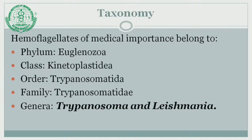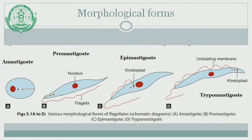Haemoflagellates of medical importance belong to the phylum Euglenozoa. You don't have to remember all these names. The important genera Trypanosoma and Leishmania belong to the family Trypanosomatidae. These are the morphological forms which can be seen in both Trypanosoma as well as Leishmania. All morphological forms need not necessarily be present at one given time or in one given species of the parasite. The different morphological forms can be differentiated on the basis of the position of the kinetoplast and origin of the flagellum.